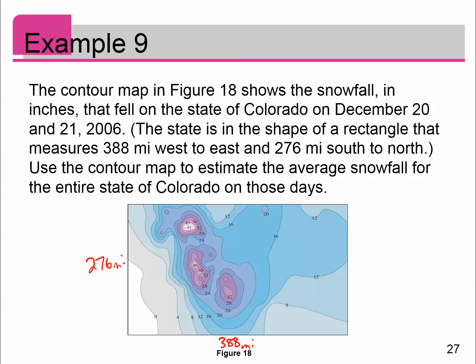This contour map shows you that in this region inside here, we would say 32 inches of snow fell on those days. In this region over here, we might see that along those lines we have 12, here's 16, here's 20, all the way up to 42 up here. I want to find what was the average snowfall across the entire state.